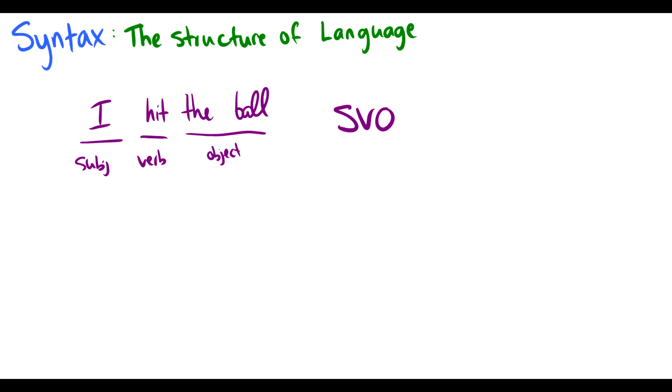Now, all of these other different permutations of subject, verb, and objects actually exist in other languages. For instance, as you'll see in the first introductory syntax video, Japanese is subject, object, verb. There are other languages where the verb comes first, and then an object, subject, and so on.